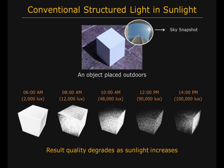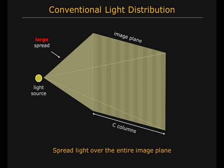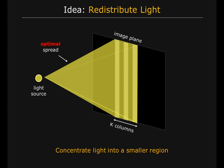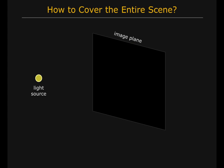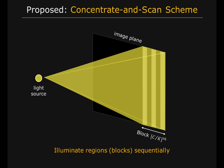In this paper, we show that it is possible to overcome sunlight by efficiently redistributing the light of the structured light source. Conventional projectors spread the available light over the entire image plane, so each scene point receives small intensity. Our idea is to increase the intensity by concentrating the light in a smaller region, illuminating different regions sequentially to cover the entire scene. We call this the concentrate and scan scheme.